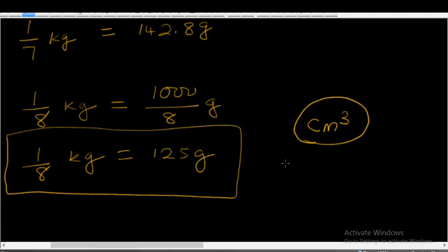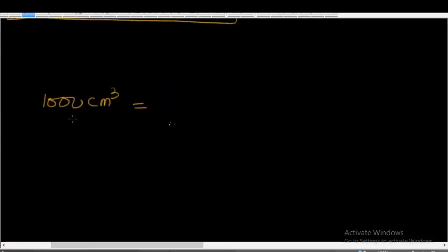When you leave the classroom and go to the market, you'll find centimeter cube is not used. If you go to the waterboard — the city water supply — and ask what quantity of water they supply, they will mention something like 2,000 cubic liters supplied to the community in the last month, which can be confusing. So: 1,000 cm cube is equal to 1,000 milliliters.